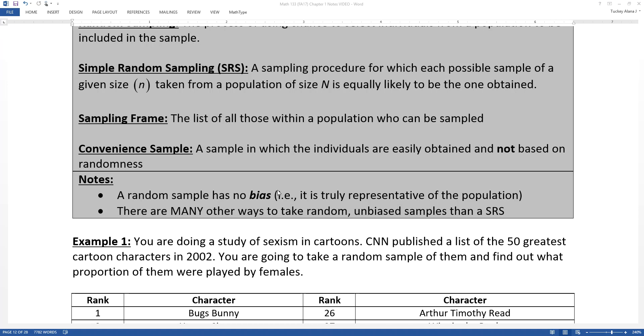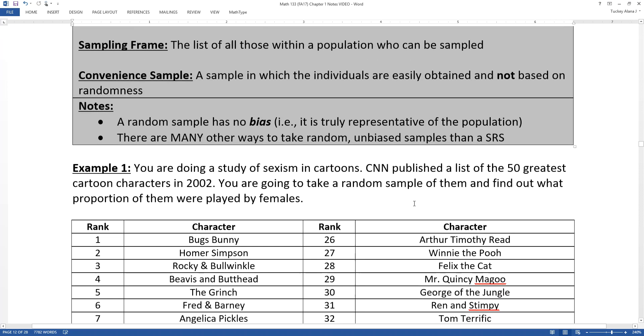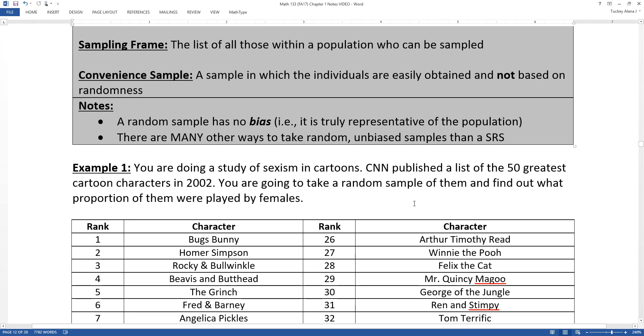Hypothetically speaking, a random sample would have no bias. It should be truly representative of the population. We will often use the words in this course random sample or random unbiased sample. They're going to work interchangeably and together for us. For our purposes, random and unbiased are going to go hand-in-hand. If they have a random sample, then you're not going to have a biased sample. There are many, many other ways to take random unbiased samples than a simple random sample. We are just going with a very basic one to begin with.